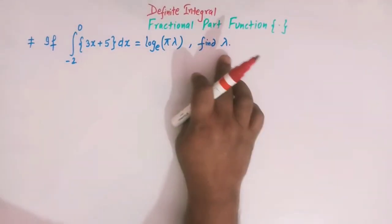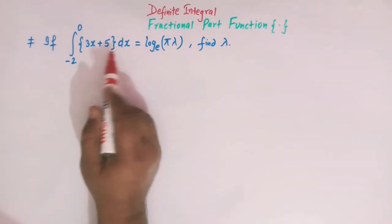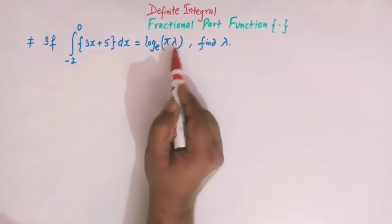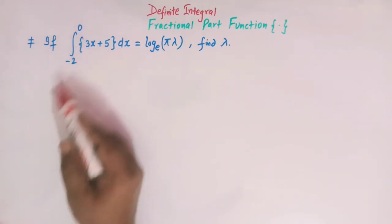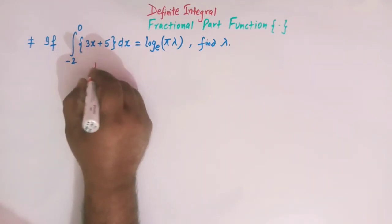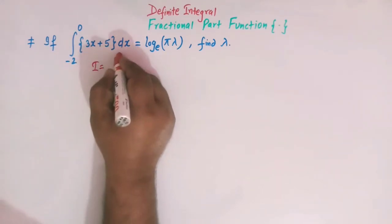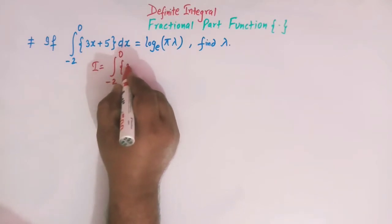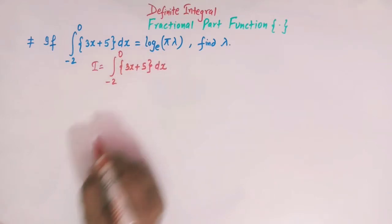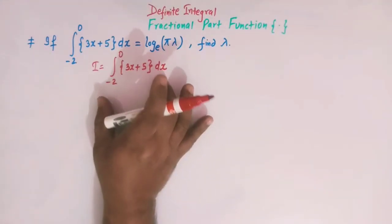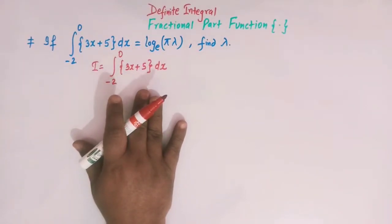To find the value of lambda, we have to first calculate the value of this integral. Let us call this integral I, where I equals the integral from minus 2 to 0 of the fractional part of 3x plus 5 dx. In order to solve this integral, we will make use of the method of substitution.